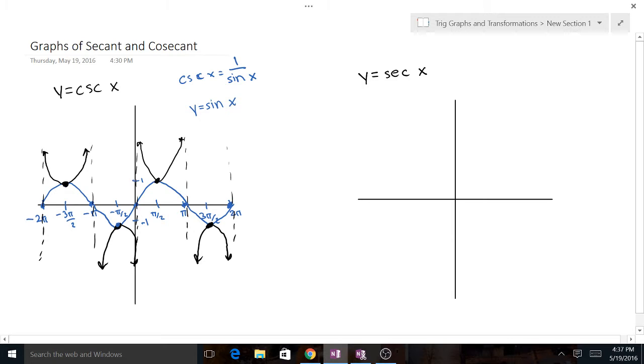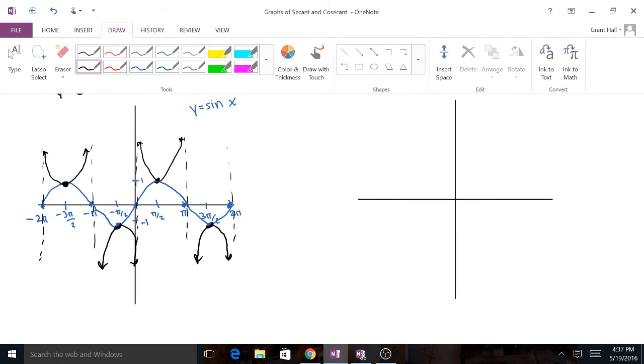So that y equals cosecant of x is what we see in black right here. The best way to draw it, I think, is undoubtedly to draw on the basic sine function, and then just have the asymptotes and work your way off that. So that's the way to do a basic y equals cosecant.